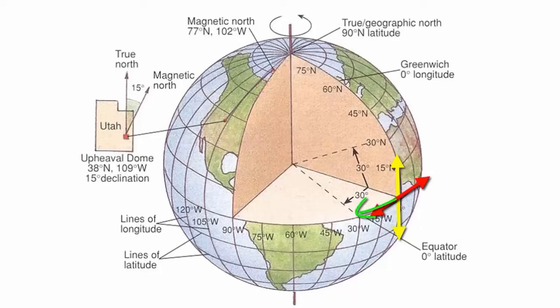Starting at the prime meridian, we have to travel more than one-quarter of a circle west to get to Utah. In fact, we travel exactly 109 degrees west. And from the equator, we travel not quite 45 degrees north, but 38 degrees north.